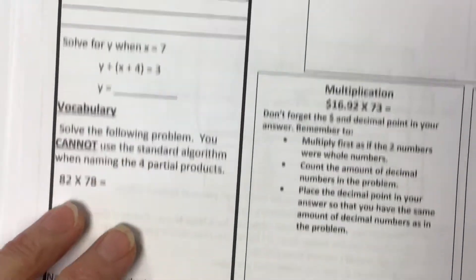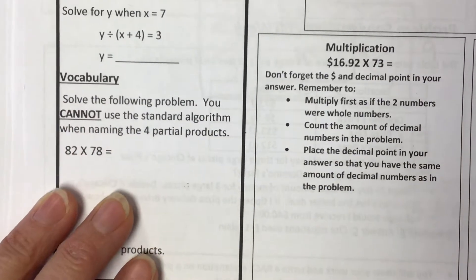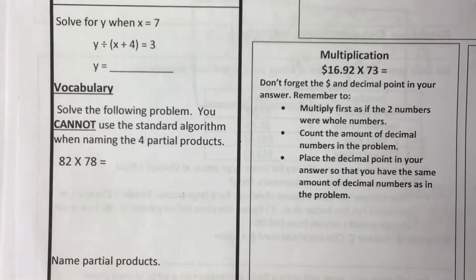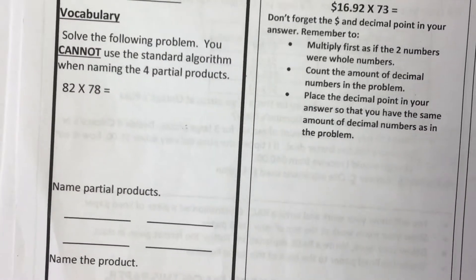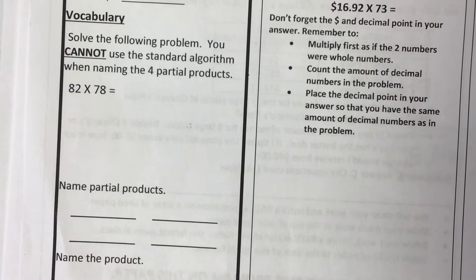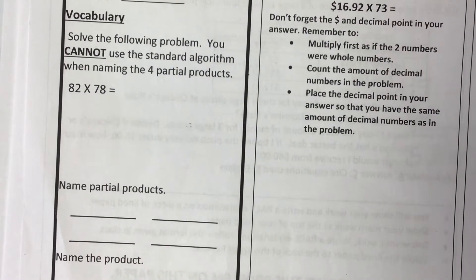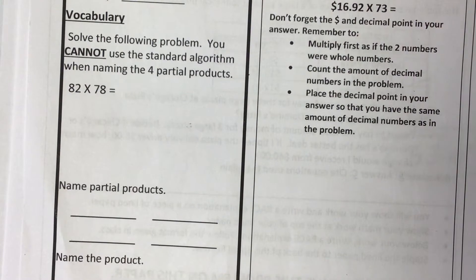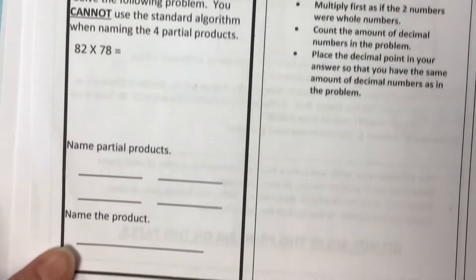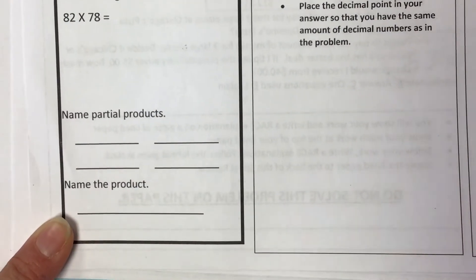Okay, now solve the following problem. You cannot use the standard algorithm when naming the four partial products. So, because it's asking you to name the partial products, you need to either use an area model, that would probably be the easiest, or partial quotients, or the distributive property, to do 82 times 78. Okay, and then the product is just when you add all four partial products together.